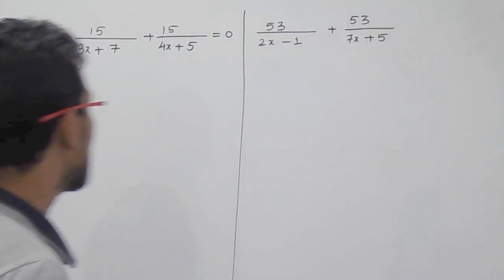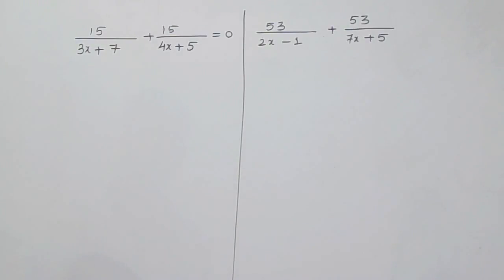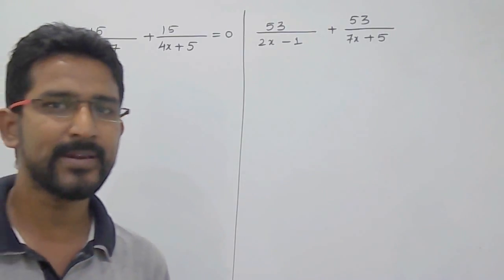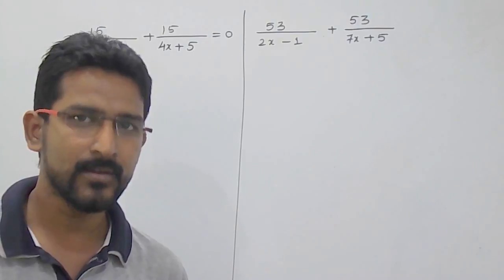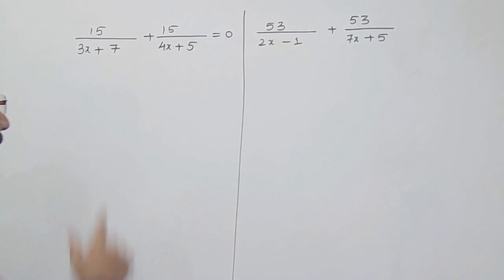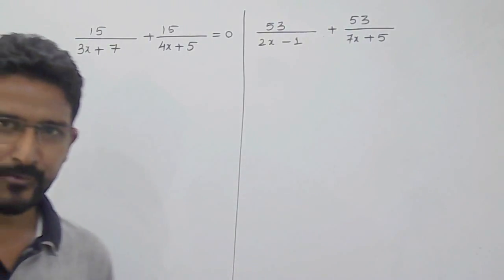For example, 15 upon 3x plus 7 plus 15 by 4x plus 5. If you see, the numerators are same. So don't do any cross multiplication here. Use this trick and you will get the answer of this equation.